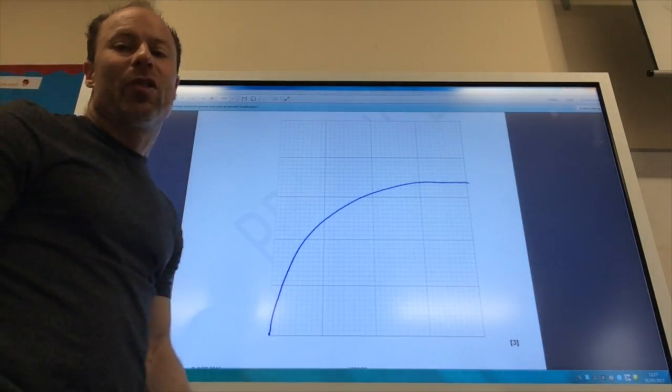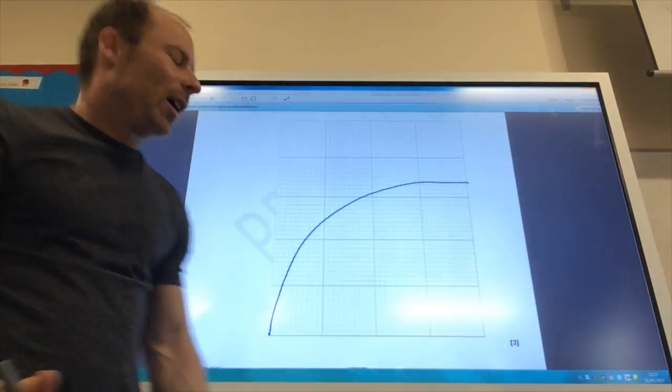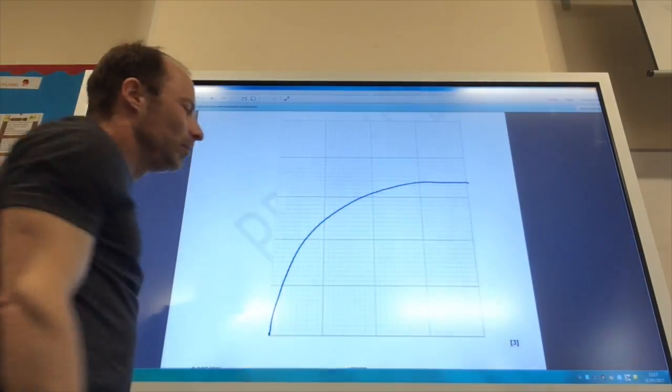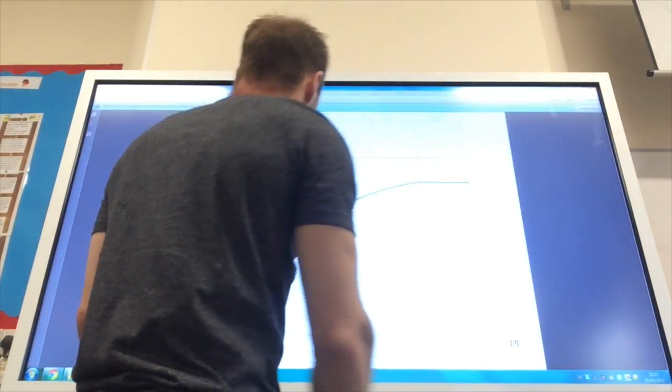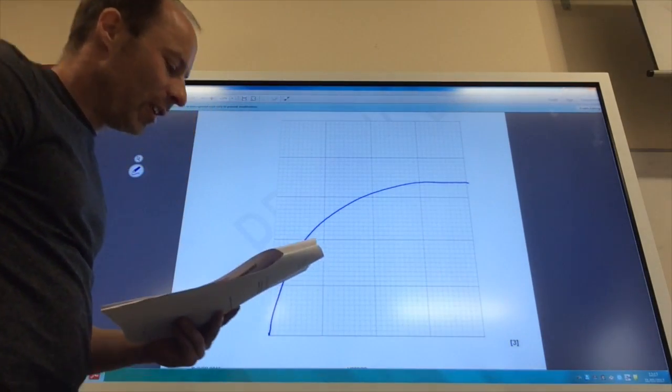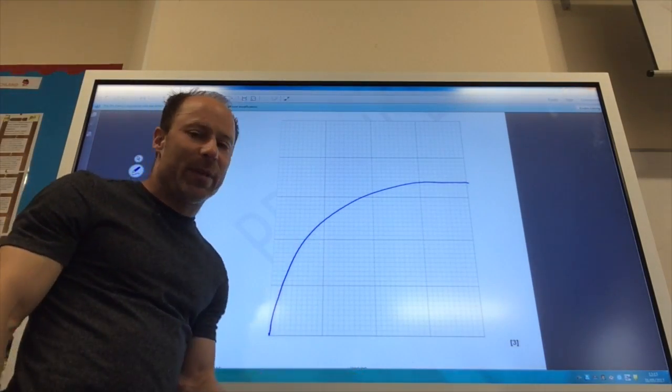Okay, so for the next one, I haven't actually plotted the graph, but it should look something like this. Make sure you get yourself a decent scale, you label your axis, with time in seconds on the horizontal axis, and concentration of SO3 in moles per decimeter cubed.